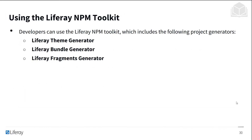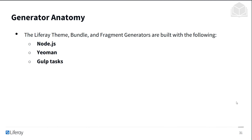The Liferay NPM toolkit includes the following project generators: the theme generator, the bundle generator, and the fragments generator. The anatomy of a generator — the Liferay theme, bundle, and fragment generators are built with the following technologies: Node.js, Yeoman, and Gulp tasks.